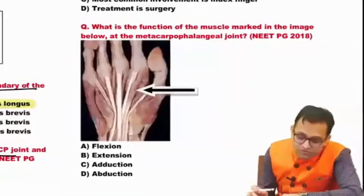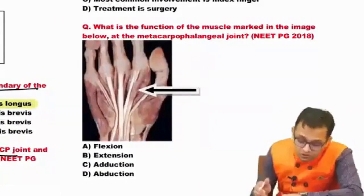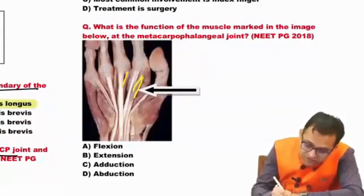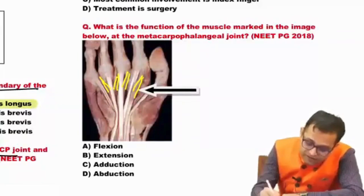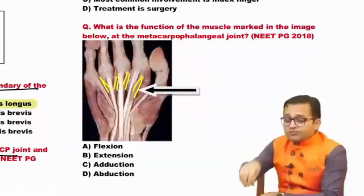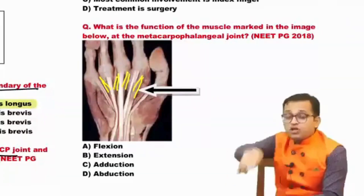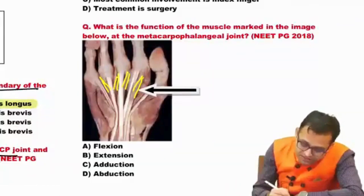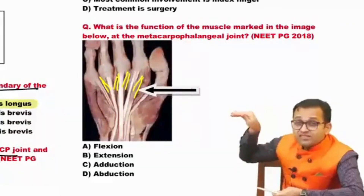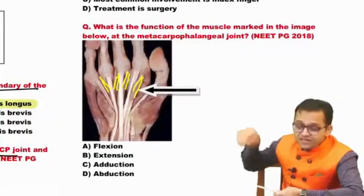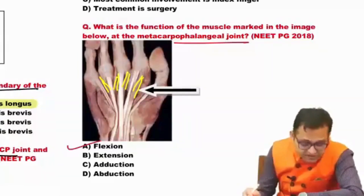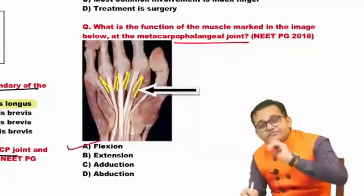Next question: what is the function of the muscle marked in the image? These are very thin, small, lumbricoid-like muscles — these are the lumbricals. Lumbricals are responsible for the pen-holding position. The answer is: lumbricals cause flexion at the metacarpophalangeal joint and extension at the interphalangeal joint. So at the metacarpophalangeal joint, it is causing flexion. Answer is A.